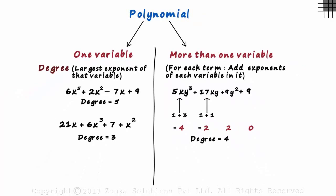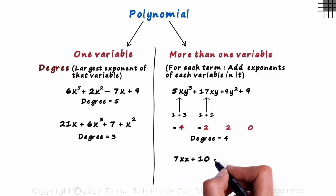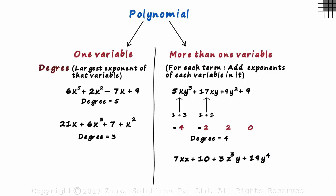Here is our last example. 7xz plus 10 plus 3z cubed y plus 19y raised to 4. We have four terms here. In the first term, the sum of exponents of x and z is 2. In the second case, since we have no variables, the exponent is 0.